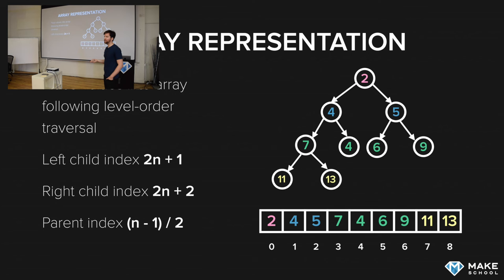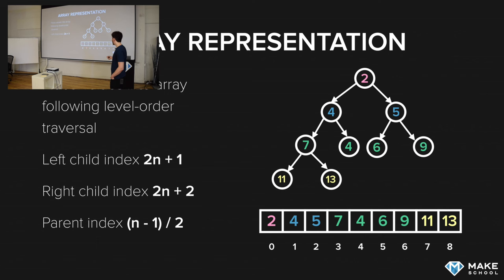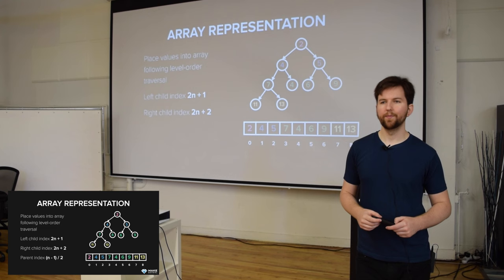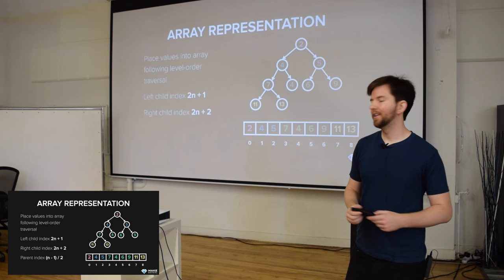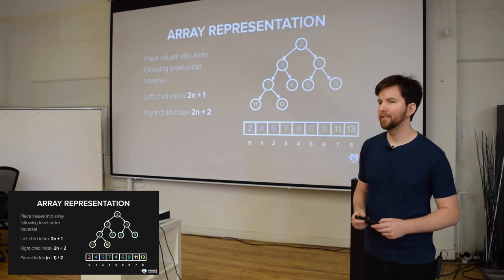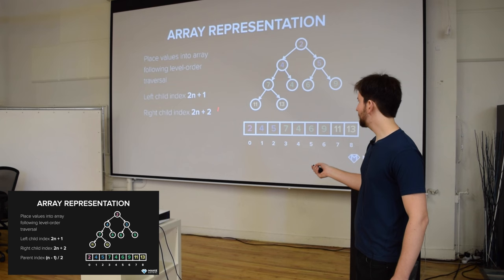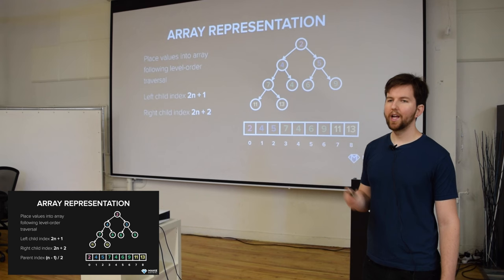You can calculate the left child index as 2n + 1. The root element is at index zero, so what is its left child index? Zero times two plus one is one — we go to index one and we can see four is there, which is correct. What about seven? The right child formula: seven is at index three, so times two is six, plus two is eight, and there we can see 13 — so it all works correctly.